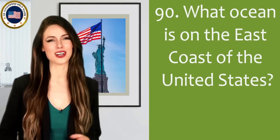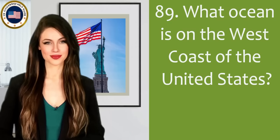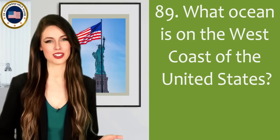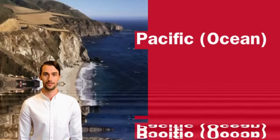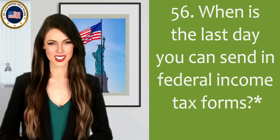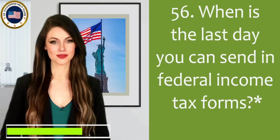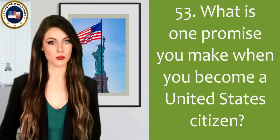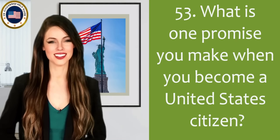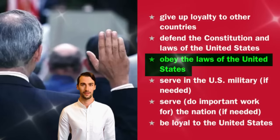What ocean is on the East Coast of the United States? Atlantic Ocean. What ocean is on the West Coast of the United States? Pacific Ocean. When is the last day you can send in federal income tax forms? April 15. What is one promise you make when you become a United States citizen? Obey the laws of the United States.